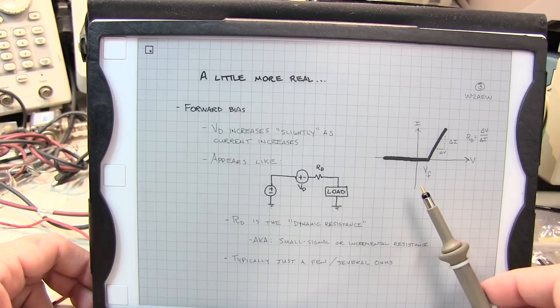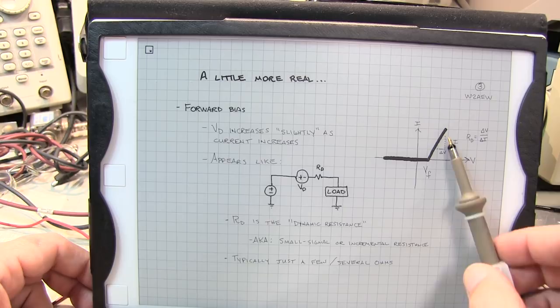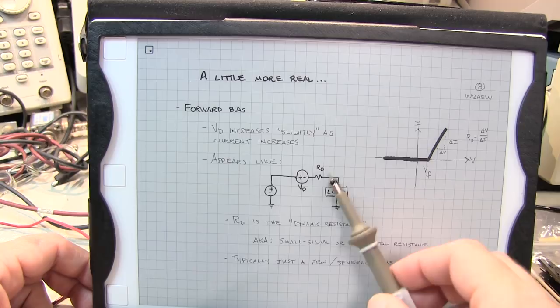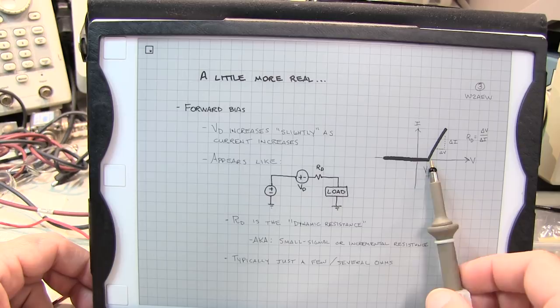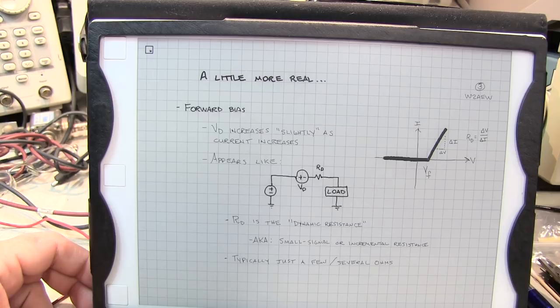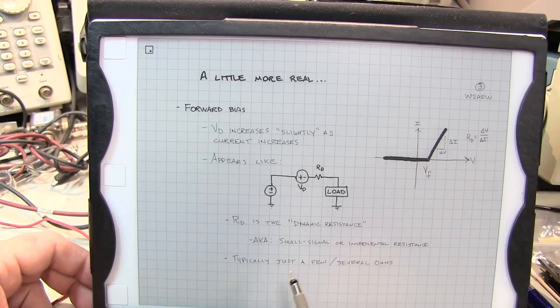And you have essentially this sloped line which is essentially a small resistance value. You have a change in voltage and a change in current. We can call that the dynamic resistance of the diode. So now the diode looks like a constant voltage in series with this dynamic resistance or small signal or incremental resistance. And this small incremental resistance is often just a few or maybe several ohms. It'll vary depending on the particular diode that we're talking about.